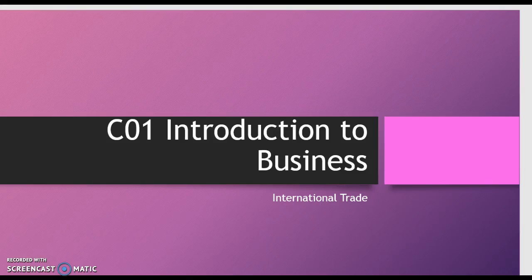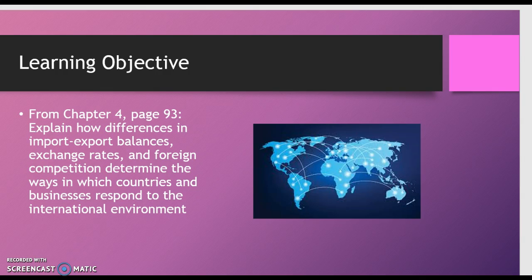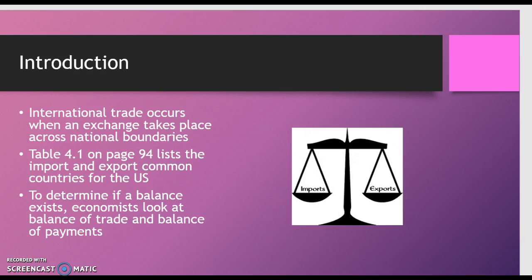Hello students. Today's live lesson will discuss international trade. Since I've generally covered all the lesson learning objectives in previous live lesson videos, this live lesson will contain material from chapter 4. The learning objective stated on page 93 is: explain how differences in import/export balances, exchange rates, and foreign competition determine the ways in which countries and businesses respond to the international environment. International trade occurs when an exchange takes place across national boundaries.